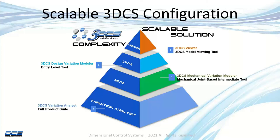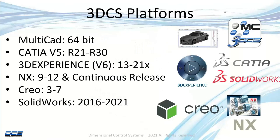At the top of the pyramid is the Viewer — a new product that allows anybody to navigate through a pre-existing model. Typical organizations have analyst groups doing the tolerance analysis, but dimensional management is the link between all the different divisions in the company: manufacturing, styling, stamping — dimensional management affects all of them. The viewer is available in all of our platforms: Multi-CAD, CATIA V5, V6, NX, Creo, and SolidWorks.